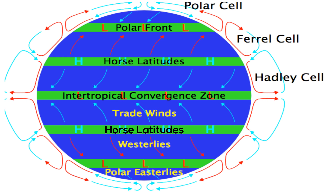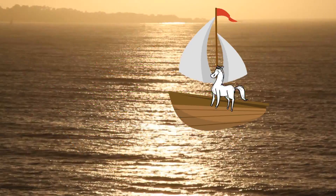And finally, the horse latitudes. At about 30 degrees north and 30 degrees south, sinking air creates an area of high pressure. The winds at these locations are weak. These areas are called the horse latitudes.